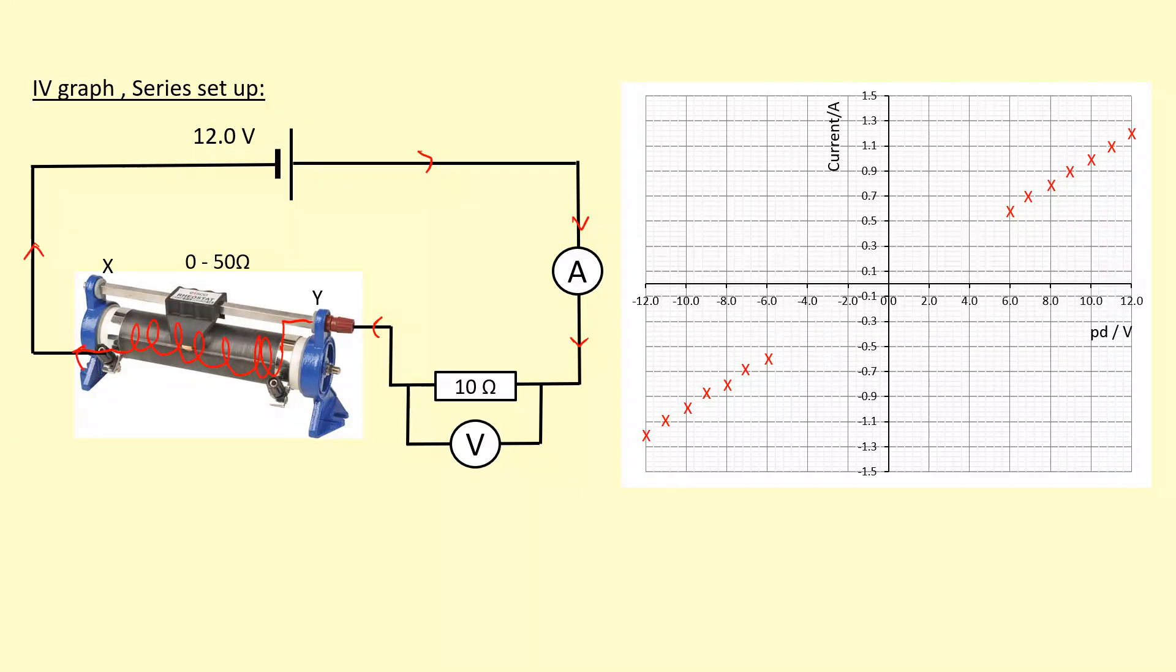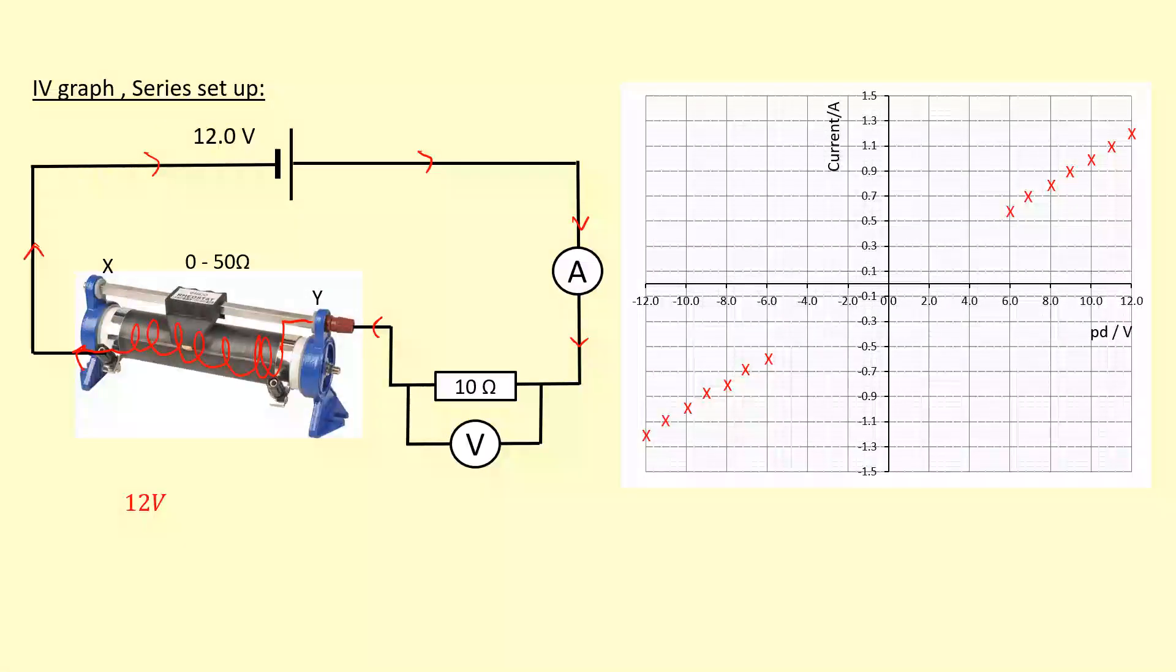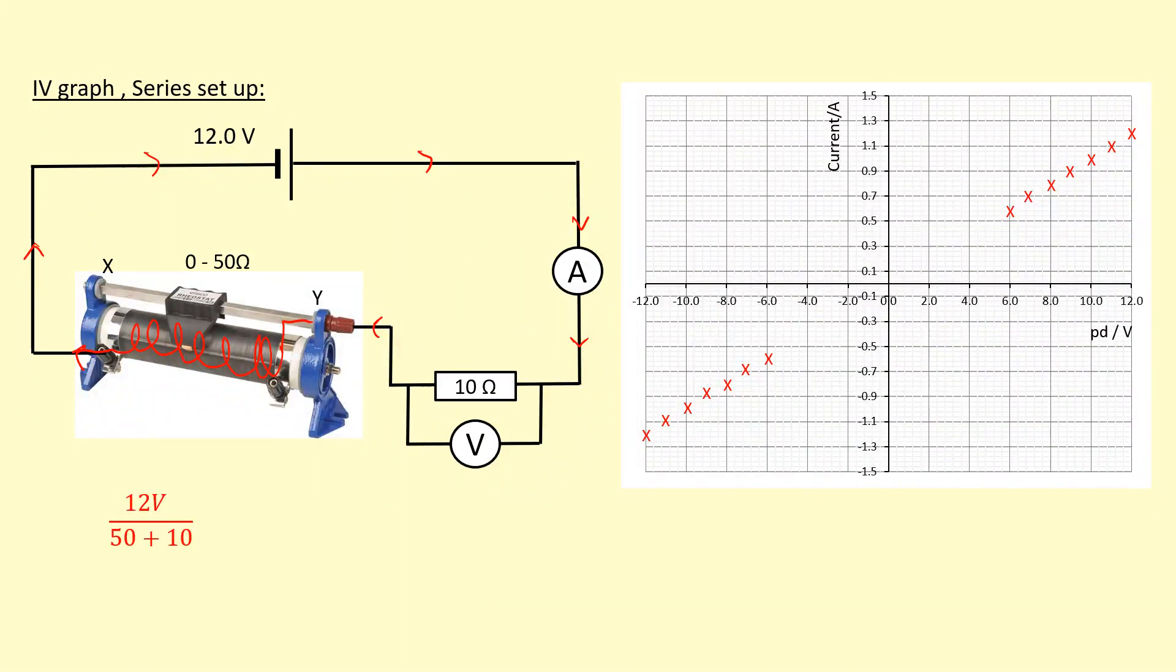To figure out the voltage, I'm going to take the 12 volts and divide it up into 60 pieces - that's the total resistance. Then give 10 of those to the 10-ohm resistor, which gives me 2 volts. So that's the lowest voltage I can get. I can't measure this region here, so I can't measure the full IV characteristic because the lowest voltages cannot be obtained using this setup.